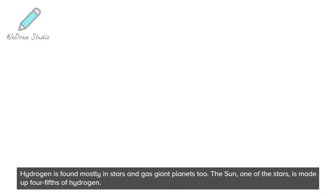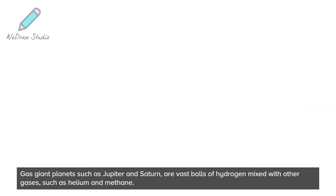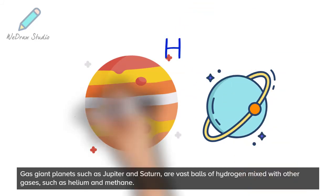Hydrogen is found mostly in stars and gas giant planets too. The Sun, one of the stars, is made up four-fifths of hydrogen. Gas giant planets such as Jupiter and Saturn are vast balls of hydrogen mixed with other gases, such as helium and methane.